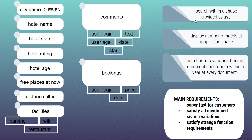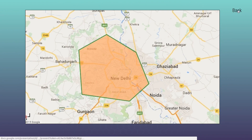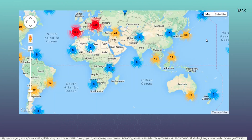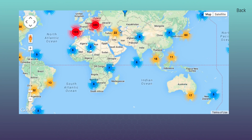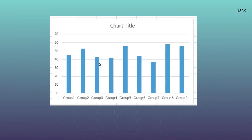And that is not all, as we have some additional requirements. The first is geo search within a shape provided by the user — it means that the user can draw some rectangle or polygon on the map and we will have to search all hotels within that shape. Another feature is displaying the number of hotels on the map: we will have to show a clustered number of hotels within some region, and while zooming the map we will have to change our returned data. We also have to show a bar chart of average rating from all comments per month within a year for every document, with months on the X axis and average rating on the Y axis.